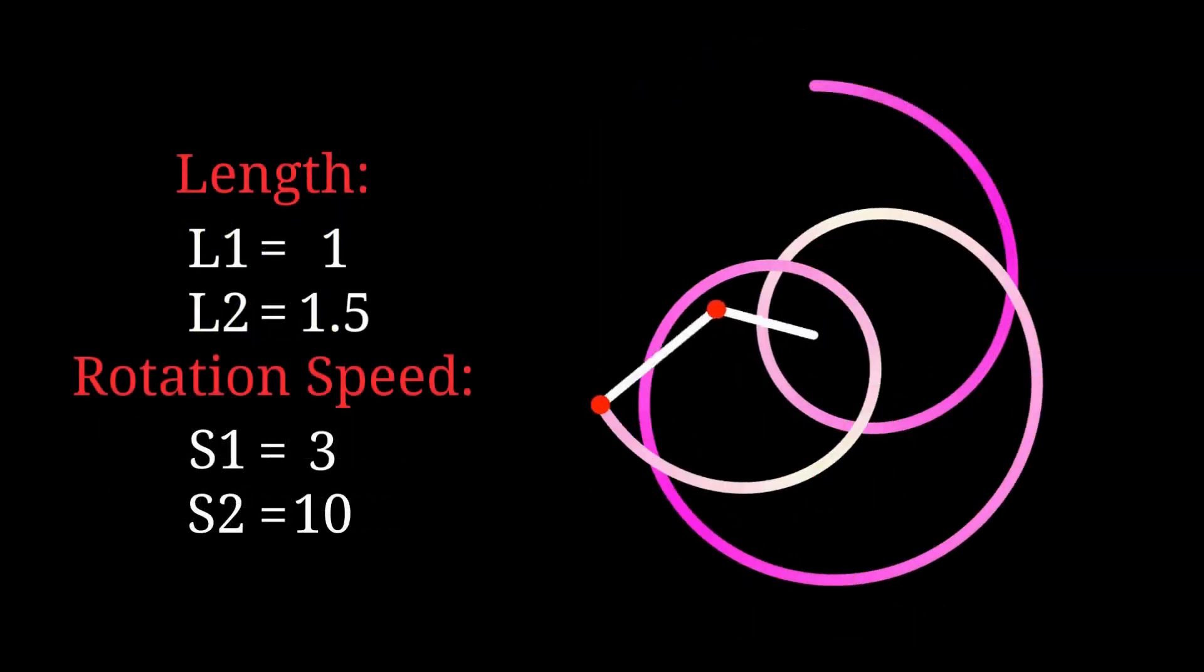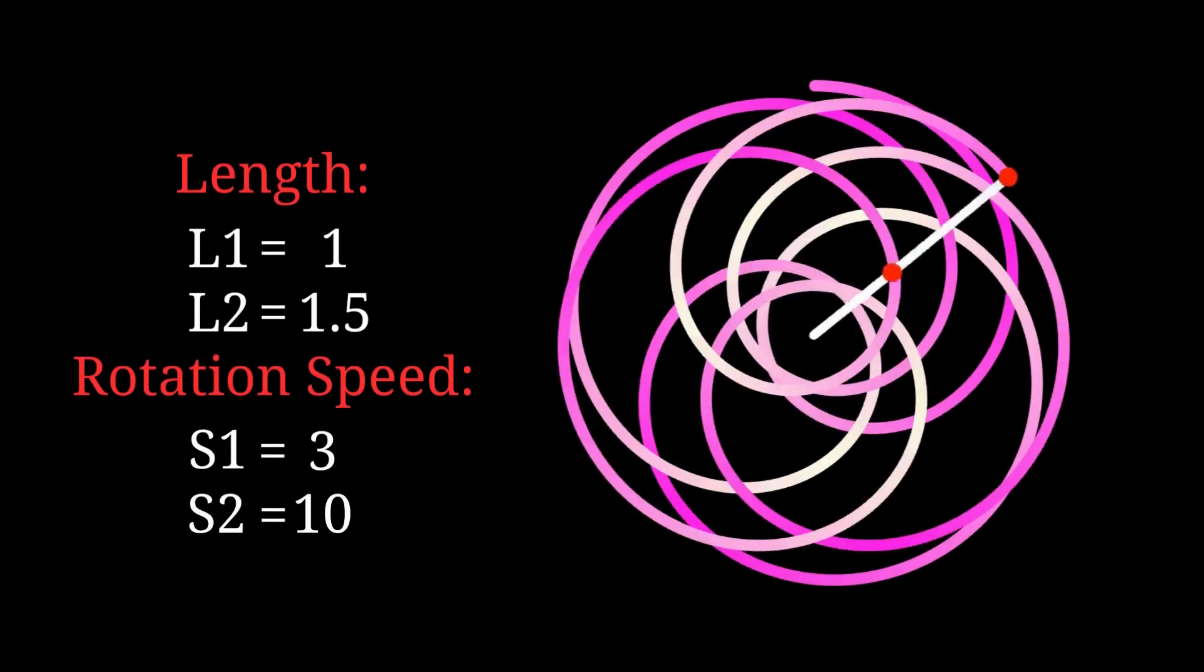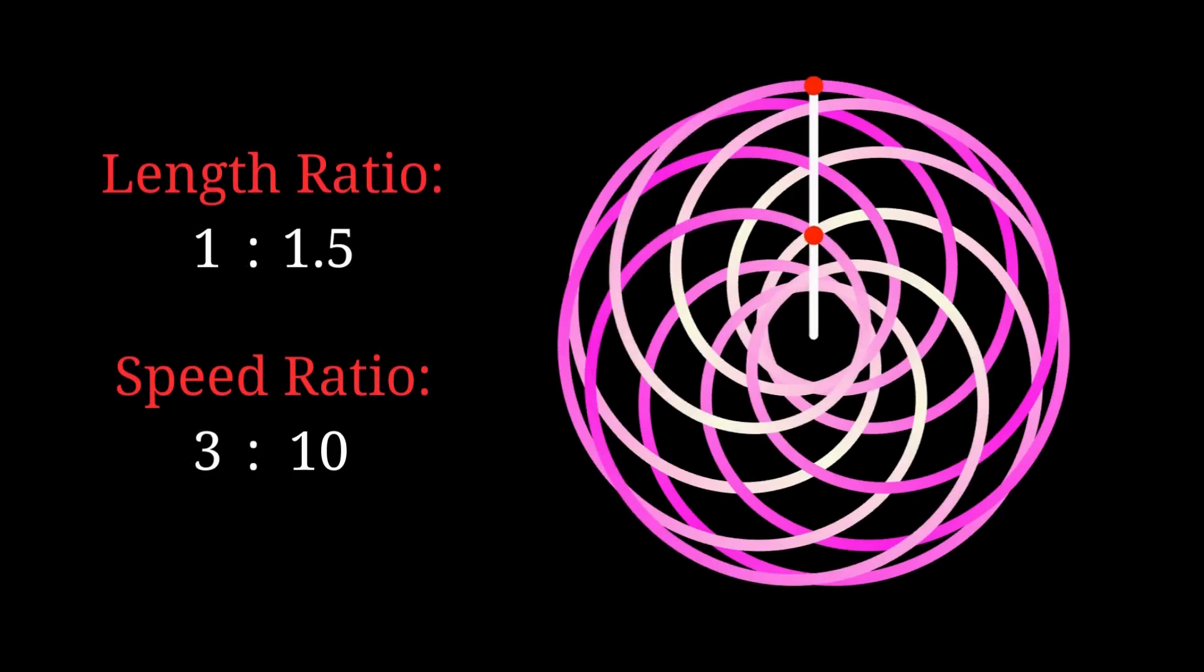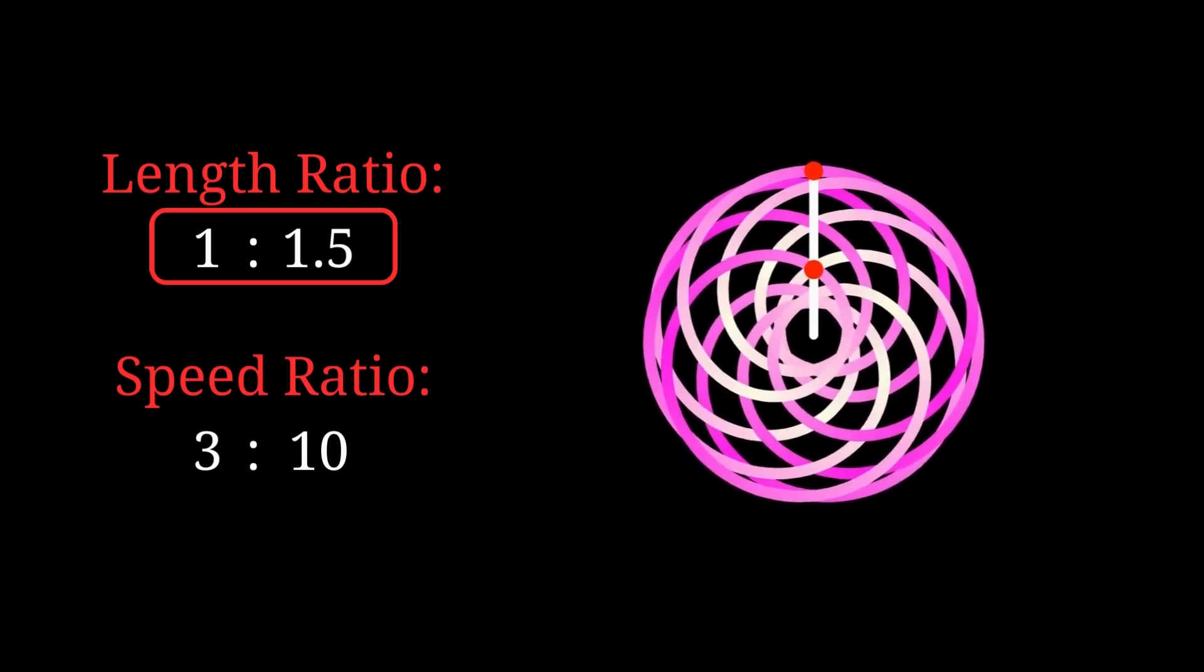If you think about it carefully, you'll realize what determines the patterns is not the lengths and the rotation speeds, but their ratios. When the length ratio is fixed, the lengths impact the size, but not the shape.